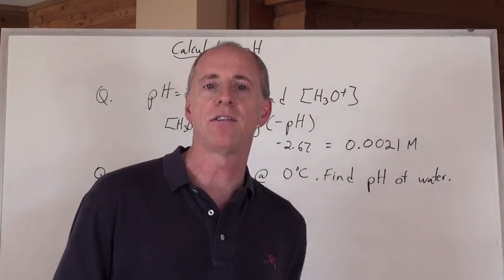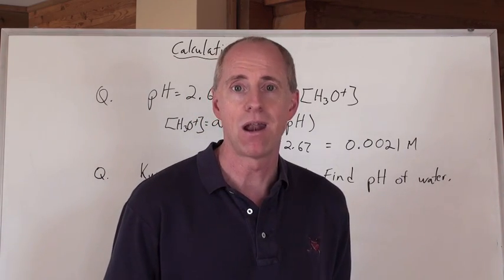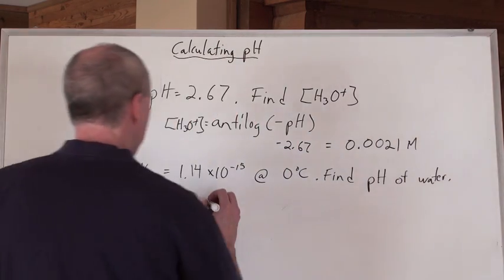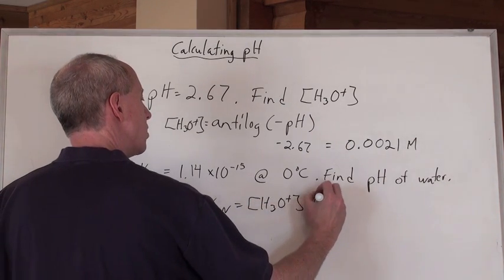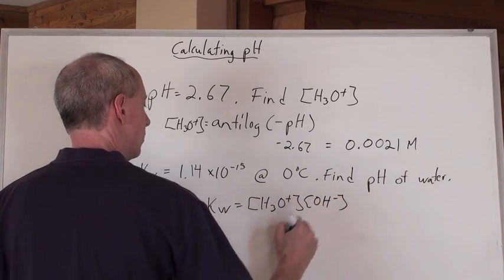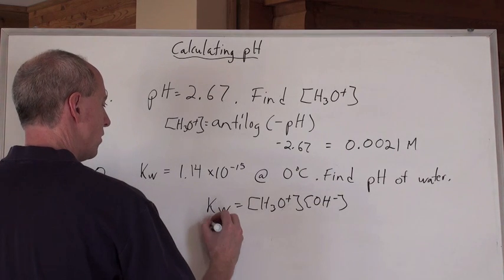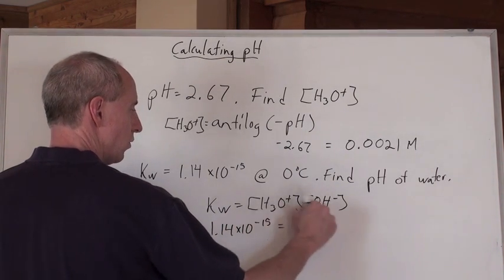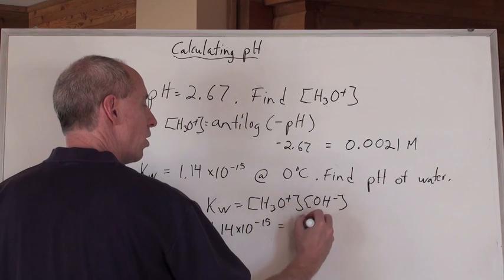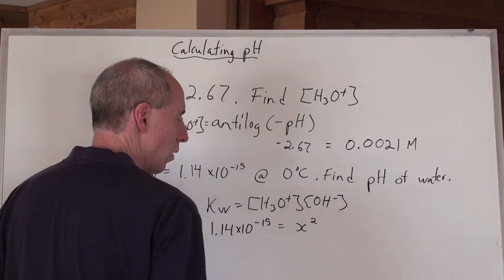Well, you're going to say, well pH of water is seven, it's always seven. Nope, because the kW always equals the concentration of the hydronium times the concentration of the hydroxide, do you like that bracket? Now, that means here that 1.14 times 10 to the negative 15 equals those two there, and if they're both the same concentration at equilibrium, they're both x, so that's x squared.